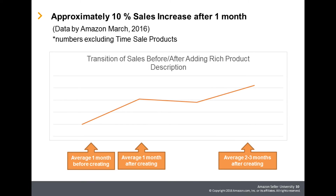This graph shows the transition of average product sales of those implementing Rich Product Description. One month after implementation, sales increased approximately 10%, and increasing sales are maintained thereafter.